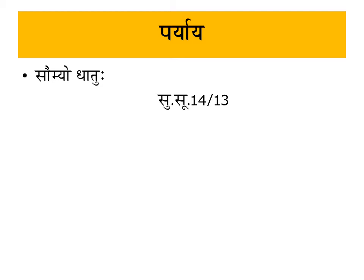Next are the Paryaya (synonyms). The first Paryaya is Sommedhatu. Ras Dhatu is called Sommedhatu because it indicates the coolness of Ras Dhatu, which is responsible for nutrition and growth of the body. Additionally, it is also called Ahar Prasad — Prasad meaning the acceptable or nourishing portion — because Ras Dhatu is the first dhatu formed from Ahar Rasa.